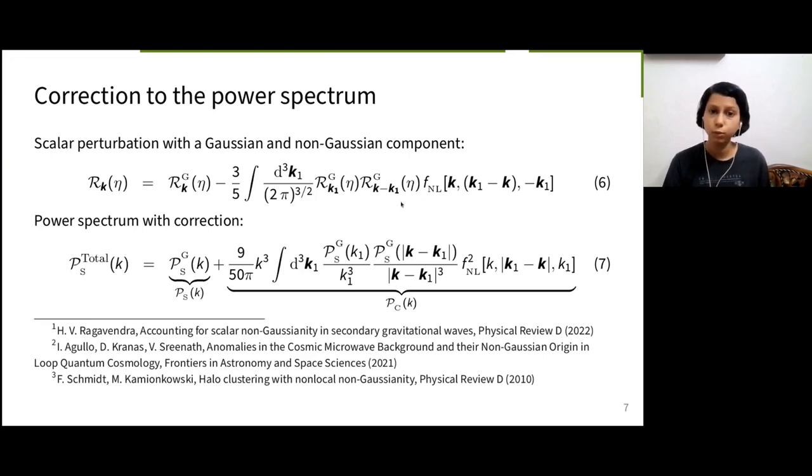Previously, we took two-point correlation of RKG only. Now, we take two-point correlation of equation 6, and we get equation 7, where we have our Gaussian power spectrum along with a correction term, which we shall refer to as PC. For details about this new method, please refer to these papers in the footnote.